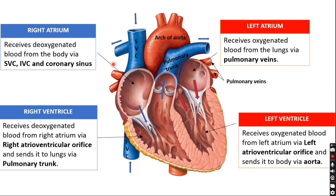The right atrium receives deoxygenated blood, while the left atrium receives oxygenated blood. The oxygenated blood drains from the left atrium into the left ventricle. The left ventricle then pumps the oxygenated blood out through the arch of the aorta to supply the whole body.